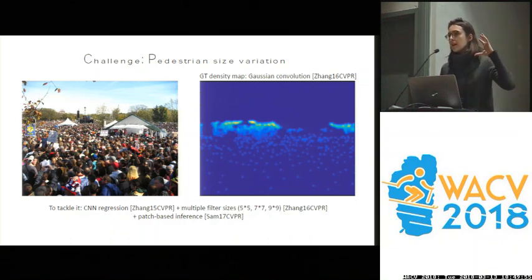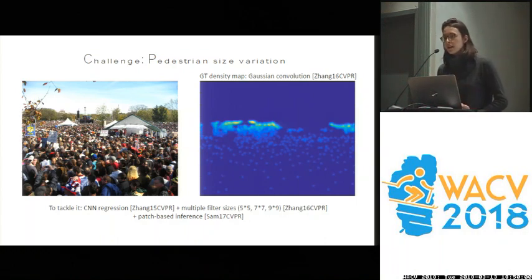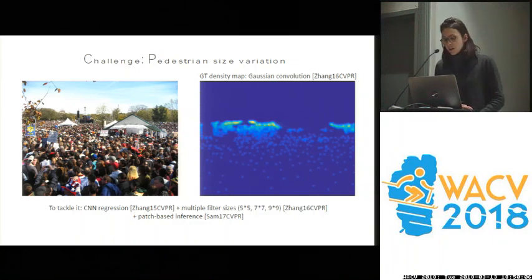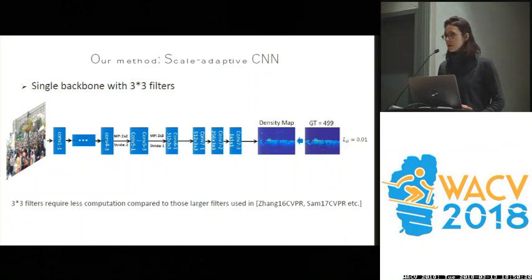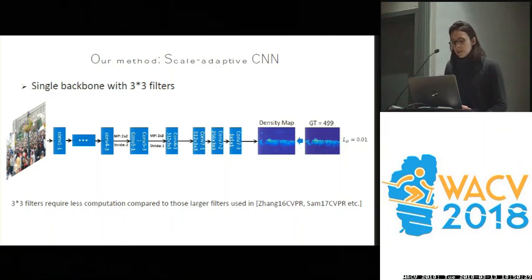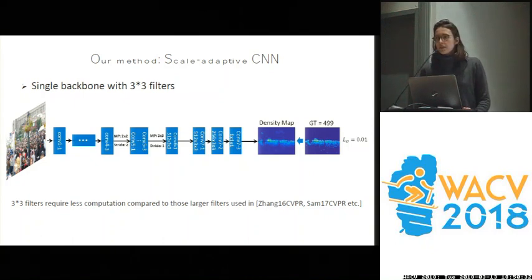Patch-based inference creates patches containing persons of approximately the same scale. However, both of these previous approaches are quite heavy to compute. They propose a new network: a single backbone based on VGG, containing only 3x3 filters, with a regression loss at the end. The regression loss compares the predicted density map to the ground truth density map pixel by pixel using Euclidean distance. Using only 3x3 filters is very efficient in terms of speed.